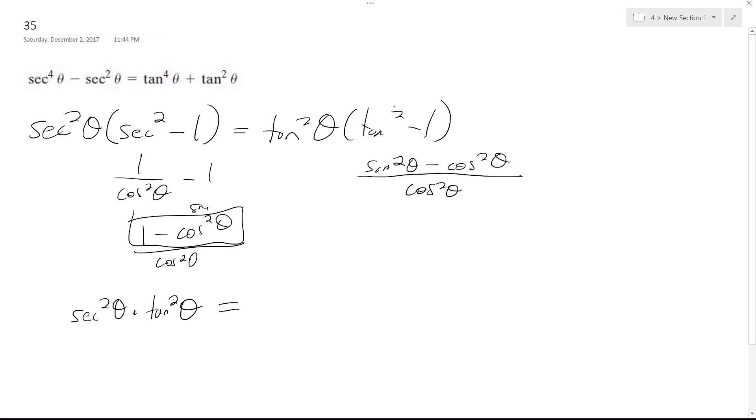Just looking this back over, this needs to be a plus one, so this becomes plus, and that's pretty easy. So this becomes one over cosine squared theta, so that's secant squared theta. So that becomes tangent squared theta times secant squared theta, and that means these are both the same thing. So that's the proof.